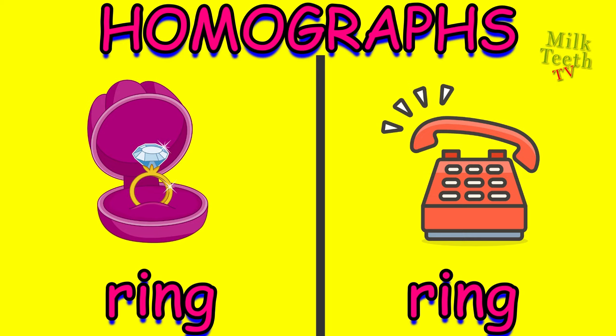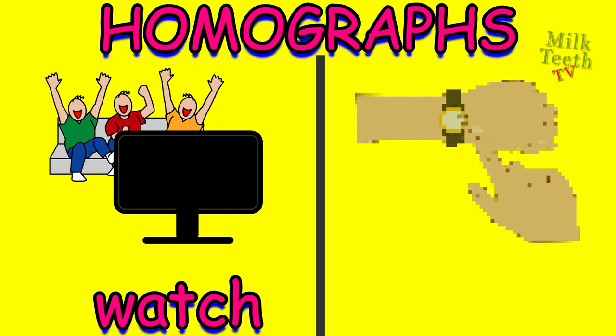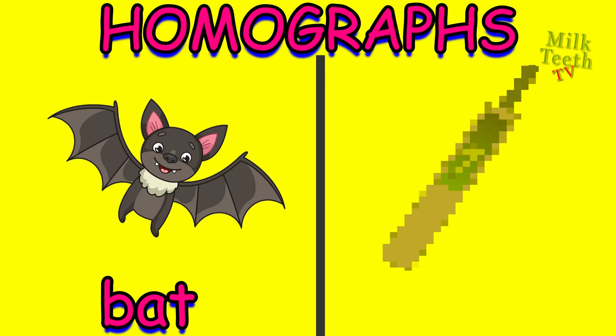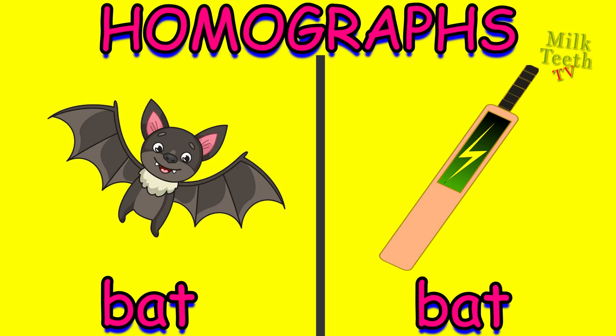Watch — watch the television. And watch — the watch we wear on our hands to look at the time. Bat — the flying mammal. And bat — the equipment used to play cricket.